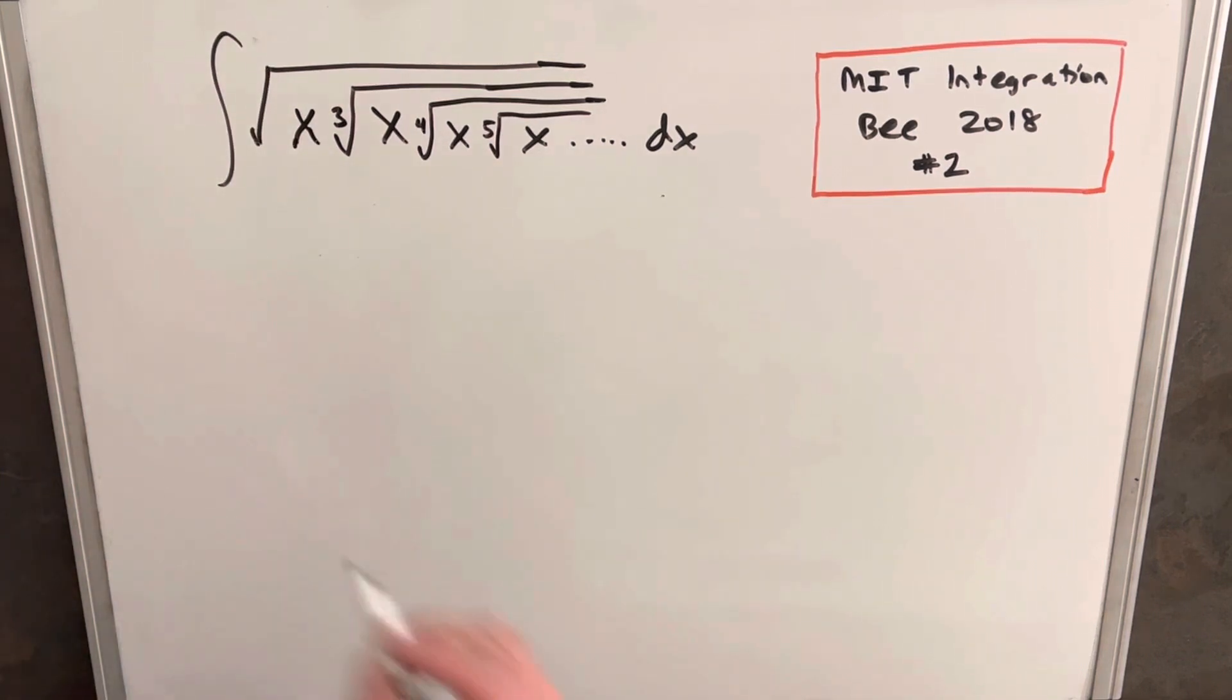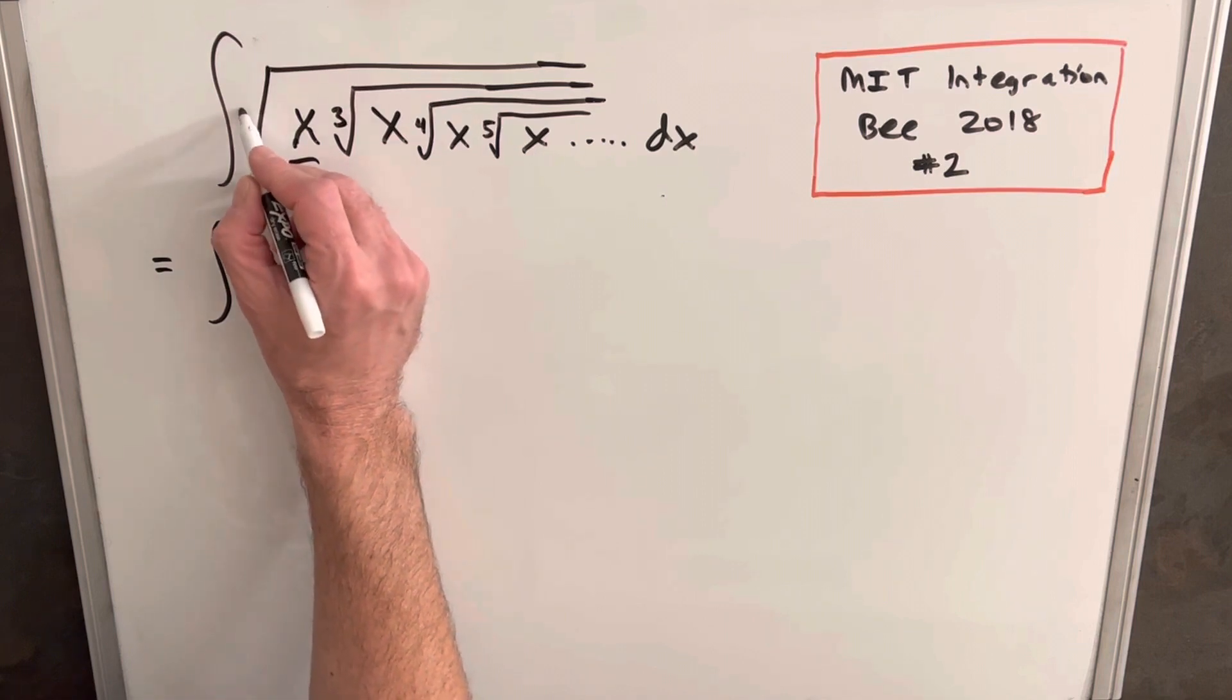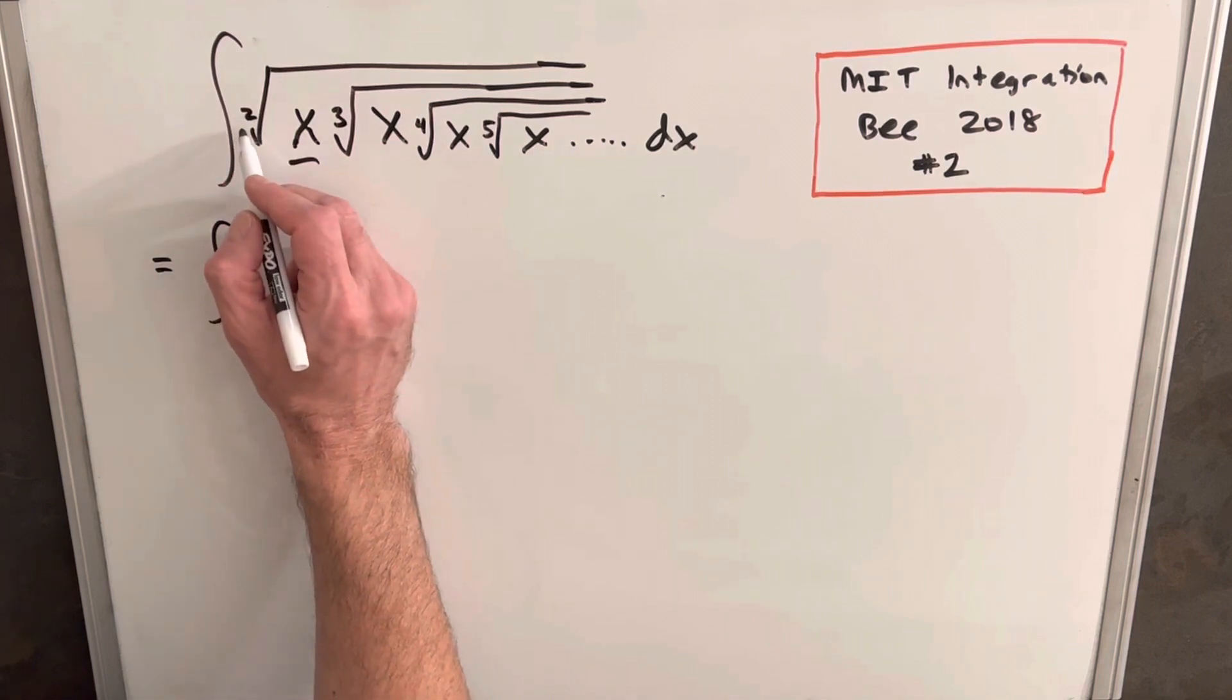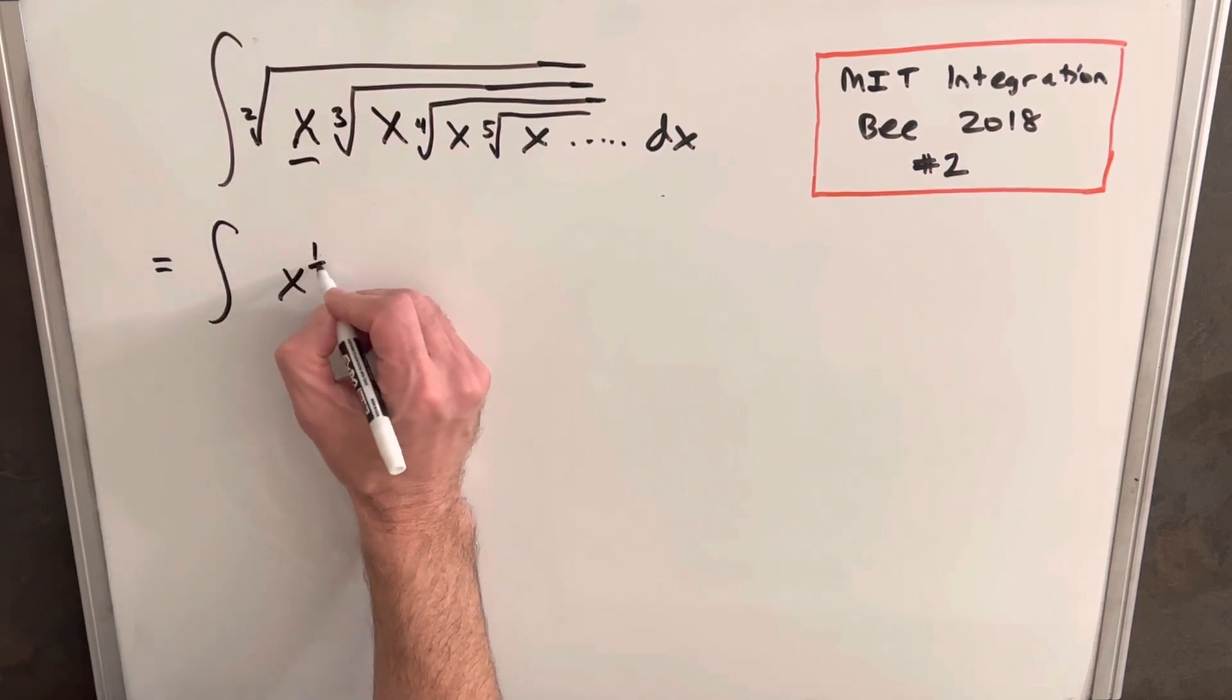I think what I want to do before anything is just rewrite this whole expression and get rid of these embedded radicals that are so hard to deal with. So if we look just at this first term, this first x, square root is, we can write that as a little two there. So we can write this first x as just x to the one-half.